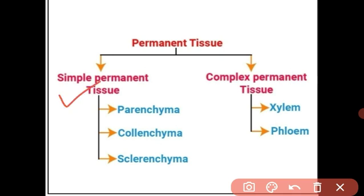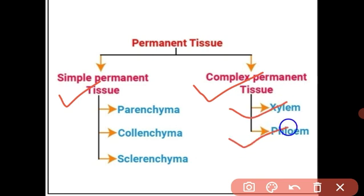Complex permanent tissue means the tissue which is made from more than one different type of cell. There are two types of complex tissue: xylem and phloem. I will explain these in detail when we cover them.